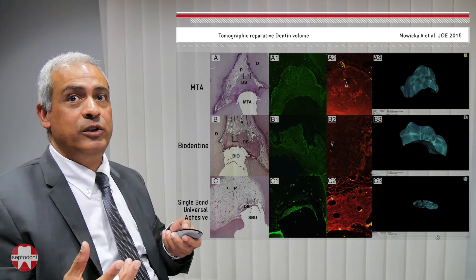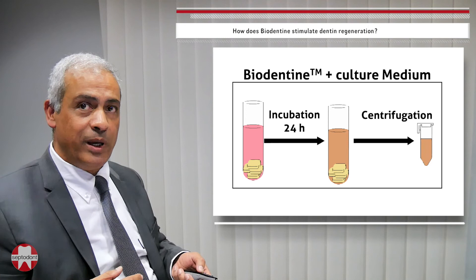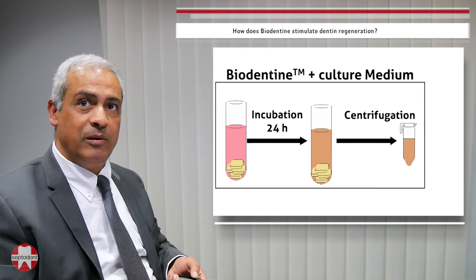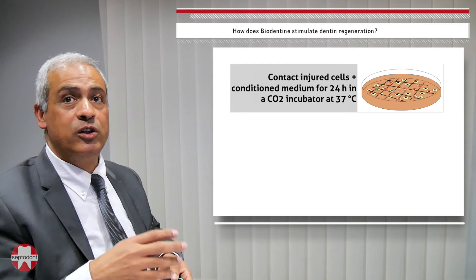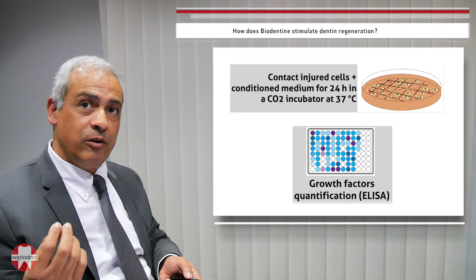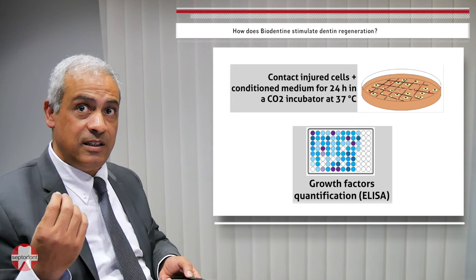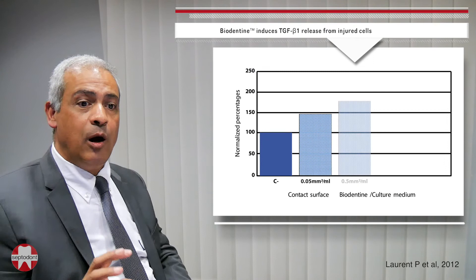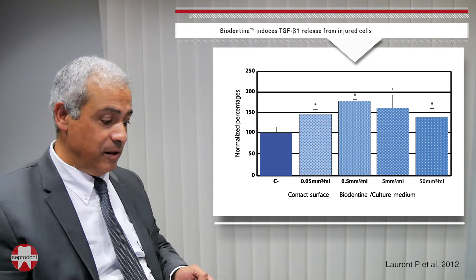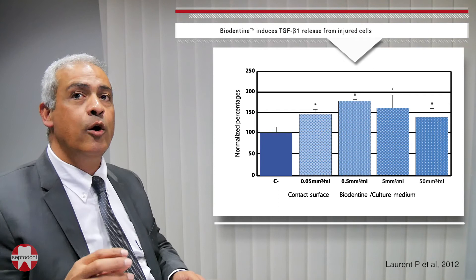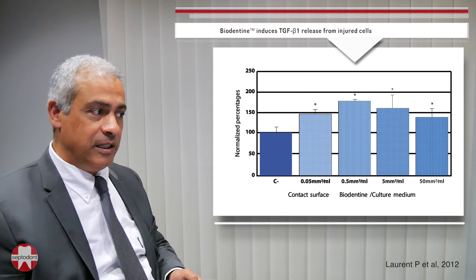To understand how this dentin bridge forms, we simulated the situation in vitro: we incubated Biodentine with culture medium, applied it to pulp fibroblasts, created injuries in the cells to mimic pulp injury, and measured growth factor synthesis. We found that angiogenic growth factors are produced — angiogenesis being essential for regeneration — and also observed a significant increase in TGF-beta 1, regardless of the material surface used. This factor is involved in odontoblast differentiation, enabling these cells to produce reparative dentin.